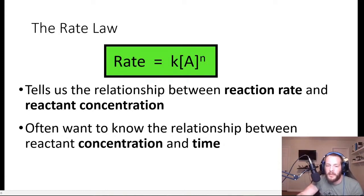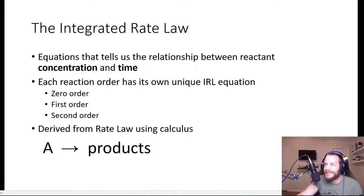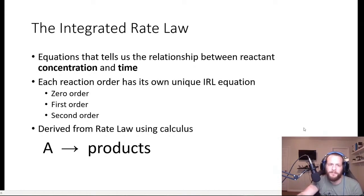If I have a reaction and I want to know how long it takes for the reactant to change from one concentration to another, what equations or relationships or expressions can we use to figure that out? The answer is called the integrated rate law. These — because there are multiple integrated rate laws depending on the order of the reaction — tell us the relationship between the concentration of a reactant and time.